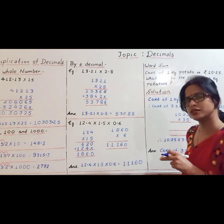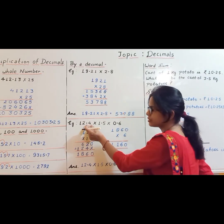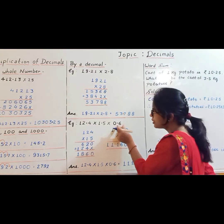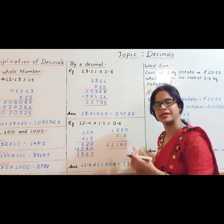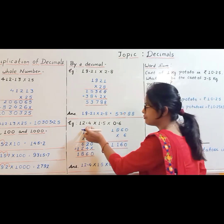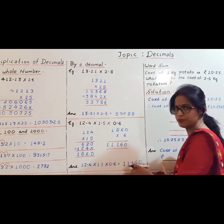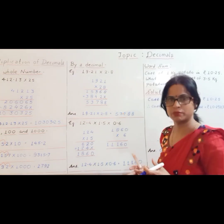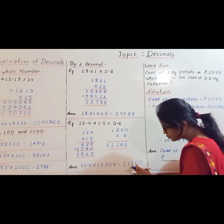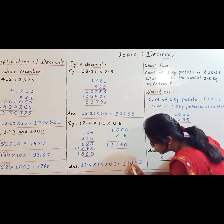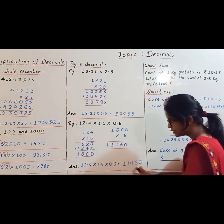Now the very important thing is how to put the decimal. Count the number of decimal places: in 12.4 it is 1, in 1.5 it is 1, in 0.6 it is 1. Add them: 1 plus 1 plus 1 equals 3. There must be 3 decimal places in the product. Count from the right: 1, 2, 3, and put the decimal there. So the product is 11.160.